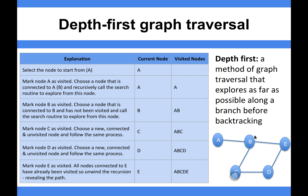C becomes visited and I need to choose a new connected node. I've only got the option of D, because I've already been to B. So I mark C as visited and go to D. I can now mark C as completely explored, because there's nowhere else to go off C.